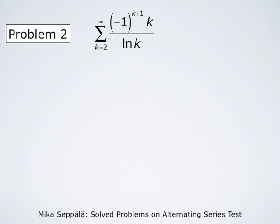In the next example, consider the series summation k from 2 to infinity of negative 1 to the power k plus 1 times k divided by natural log of k. We start the summation from 2 so that ln of k is not 0, ensuring all terms are defined. That's why we start from k equals 2.